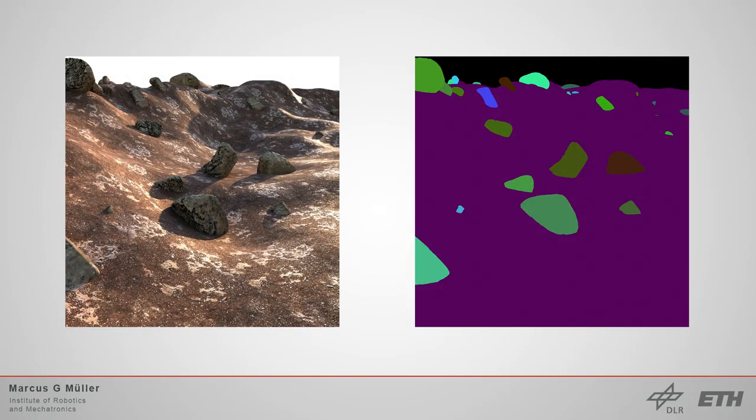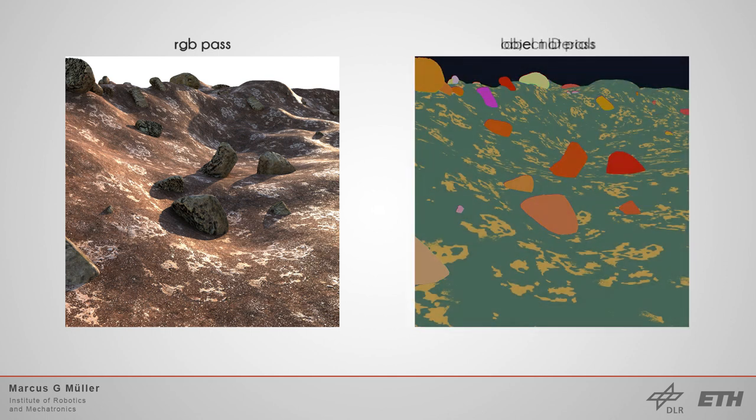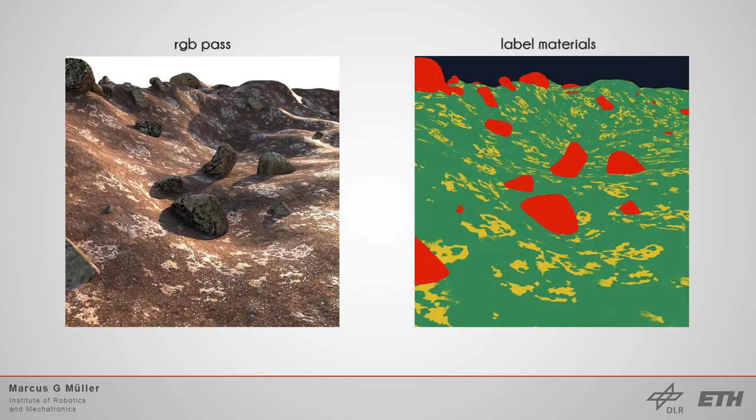One option to get the segmentation information would be to use the object ID from Blender. This is the way how many simulators get their semantic map. The problem with that is that you can just get one semantic label for one object. In our case that would mean for instance that the entire stage mesh gets assigned one single label and we cannot preserve the information of the different terrain materials of the stage. That's why we choose a different approach. Instead of using the object ID we apply colors in form of a texture to each model which represents their label ID encoded in RGB. With that we can also apply multiple colors to different sections of the same object like in our stage example.